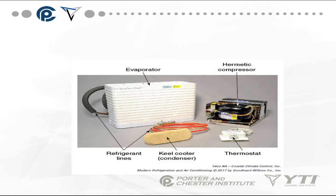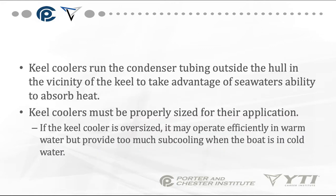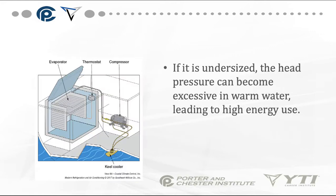This is an example of a full marine refrigeration system, showing the hermetic compressor, the evaporator, and a keel cooler condenser, where the refrigerant lines actually go through the hull. Keel coolers run the condenser tubing outside the hull near the keel to take advantage of seawater's ability to absorb heat. Keel coolers must be properly sized — if oversized, the system may operate efficiently in warm water but provide too much subcooling in cold water; if undersized, head pressure can become excessive in warm water, leading to high energy use.